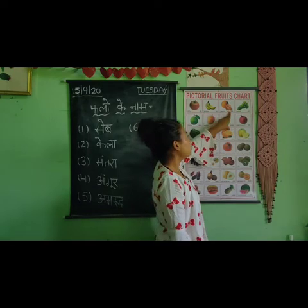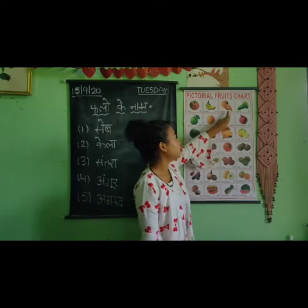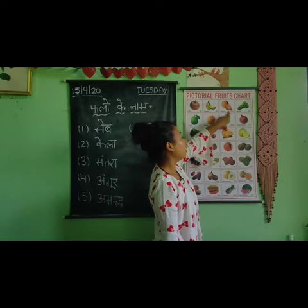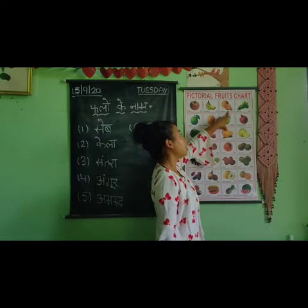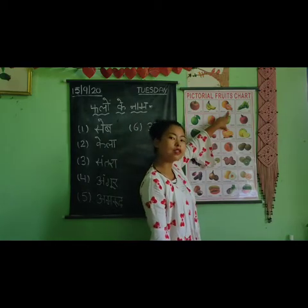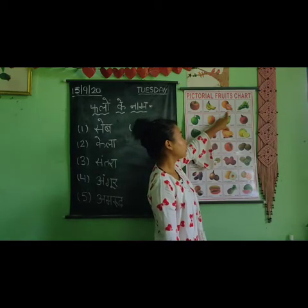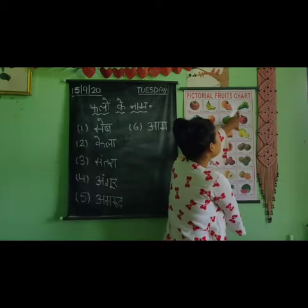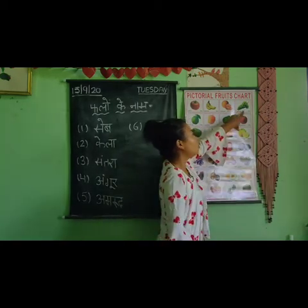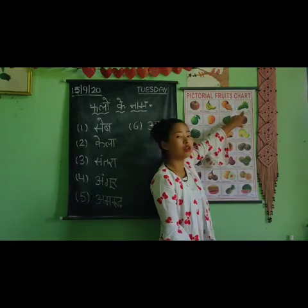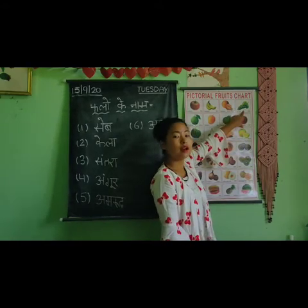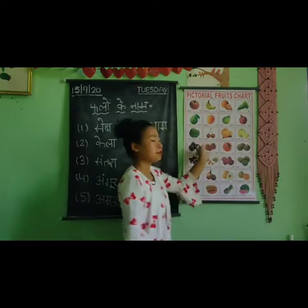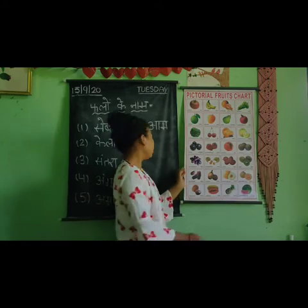Now next fruit is Santra. And next fruit — which fruit? Angoor. Angoor. Very good. English mein iska naam kya hai? Grapes. English mein naam kya hai? Grapes. Very good.